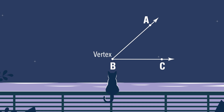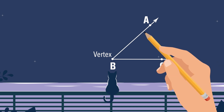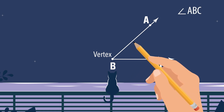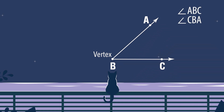An angle can be written in three different ways: angle ABC, angle CBA, or we can name the angle by the vertex. In this example, it's angle B. Notice that when you name an angle using three points, the vertex is always the point in the middle.